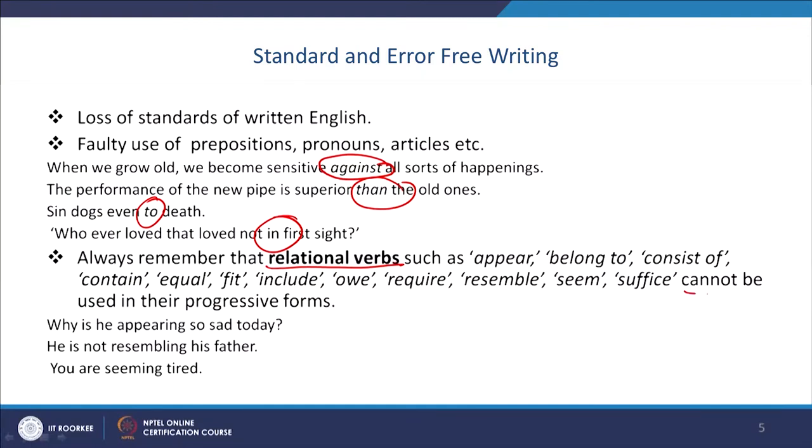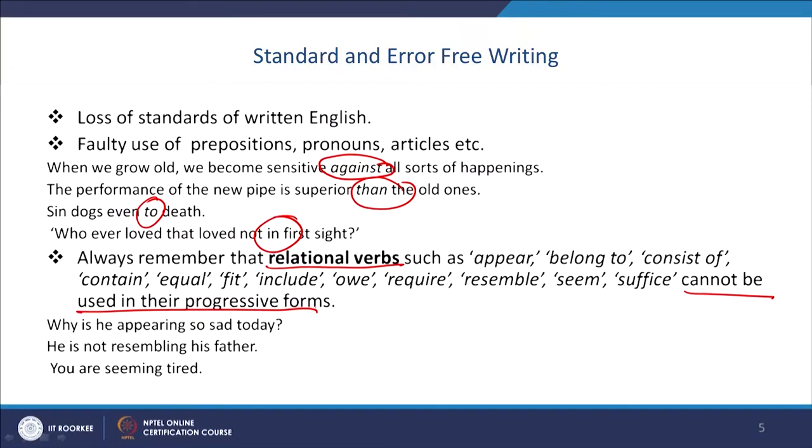Many people, because they have a fancy for speaking and writing English, come across such expressions as: 'Why is he appearing so sad today?' or 'Why is he not resembling his father?' or 'You are seeming tired.' In all these sentences, the verbs have been used in their progressive forms — and they are faulty. Rather, what we should say is: 'Why does he appear so sad?', 'He does not resemble his father,' and 'You seem tired.' We cannot make use of the progressive here.